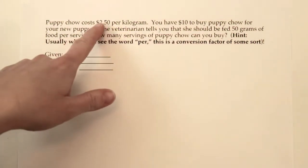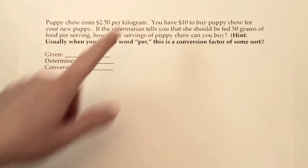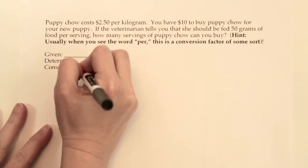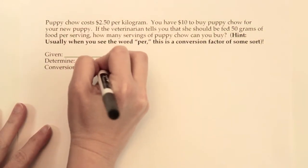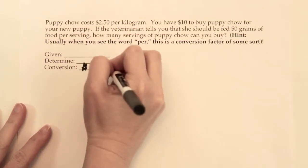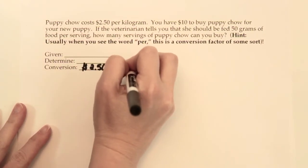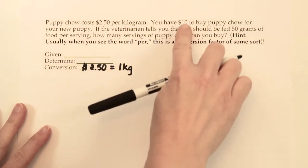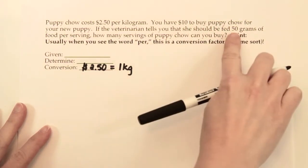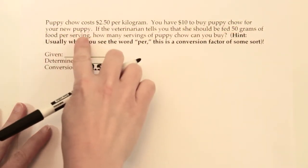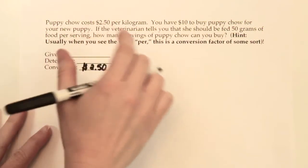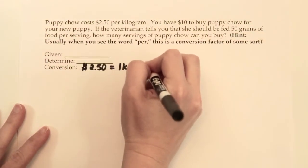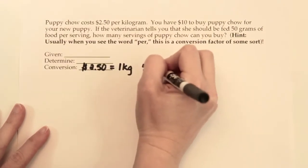So this $2.50 per kilogram, I'm going to write that in as a conversion factor — $2.50 equals one kilogram. Then we have 50 grams of food per serving, and that's another conversion factor, so I'm going to write that 50 grams equals one serving.